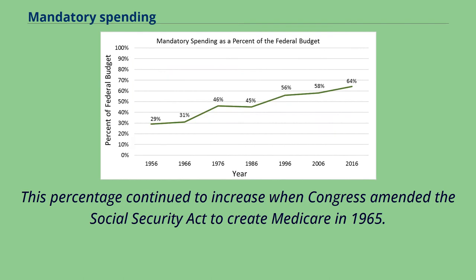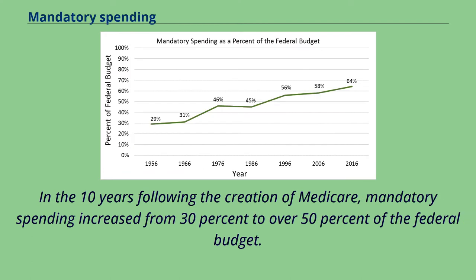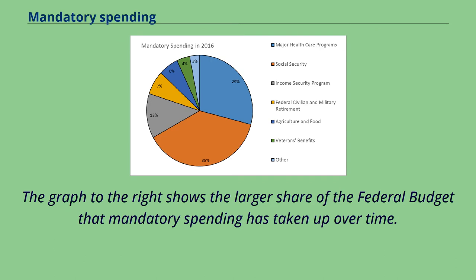This percentage continued to increase when Congress amended the Social Security Act to create Medicare in 1965. Medicare is a government-administered health insurance program for senior citizens. In the 10 years following the creation of Medicare, mandatory spending increased from 30% to over 50% of the federal budget. The graph to the right shows the larger share of the federal budget that mandatory spending has taken up over time.